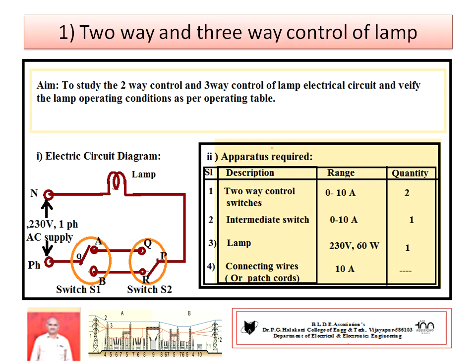First, you have to draw a neat circuit diagram using pencil and scale — this makes a good impression on examiners. After drawing the circuit diagram, you develop the list of apparatus required. Two two-way switches S1 and S2 are required, rated 0 to 10 ampere. One intermediate switch is also required. One lamp and connecting wires or patch cords rated 1 to 10 ampere are needed. Supply is available, so you should not include that in the list.